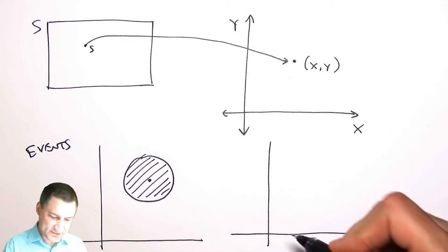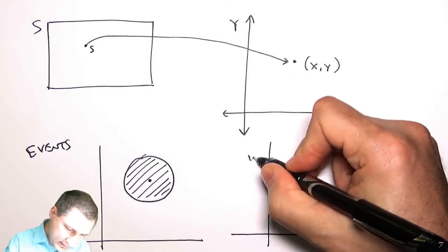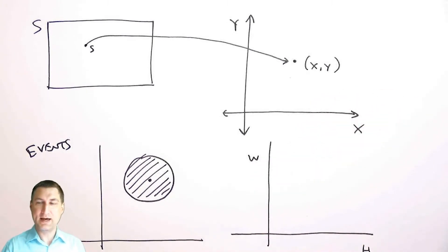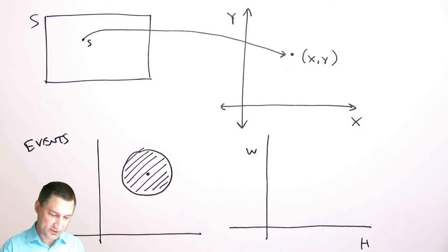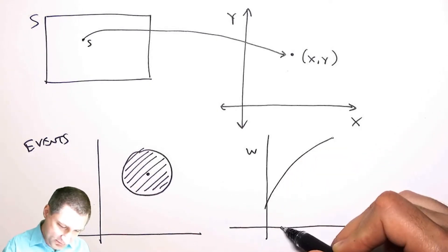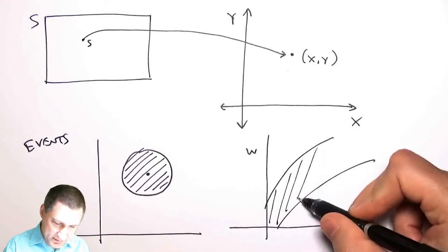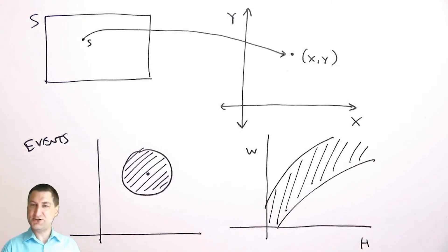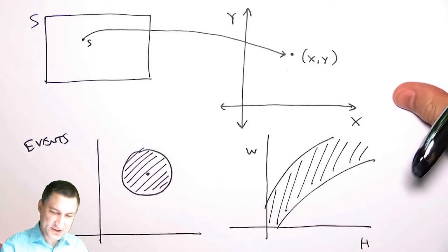Or I could look at the height and the weight of all the students in my class and plot height versus weight. There's something called the body mass index that relates these two things together. I could say, okay, what's the probability that your body mass index is in a certain range? Now these are kind of weird looking events. It's definitely more common to look at events that are rectangles.